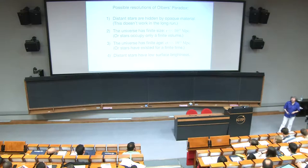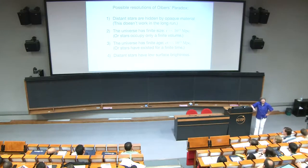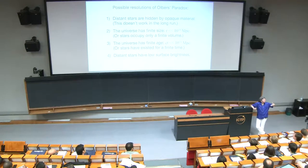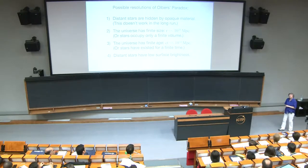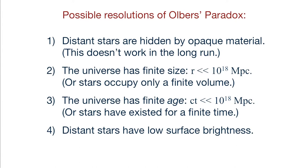Answer number one — given by Olbers himself in the 1820s — was that some sort of opaque screen between us and the more distant stars would hide them. Unfortunately this resolution doesn't work, because if you put an opaque screen between us and distant stars, the screen absorbs light and heats up until in its equilibrium state it has a surface temperature equal to that of a star — and then glows just as brightly at 5 times 10 to the minus 3 watts per square meter per square arc second.